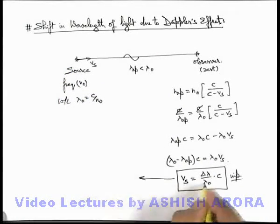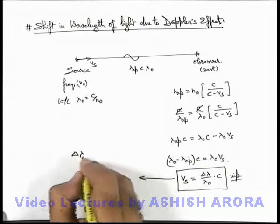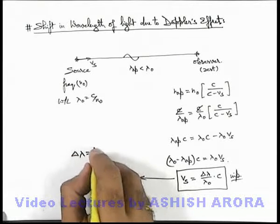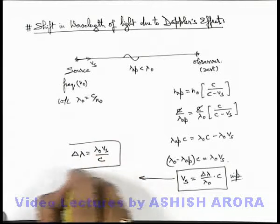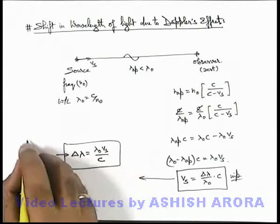And from the same expression we can find out the value of change in wavelength, which can be written as lambda knot v s by c. And here this change in wavelength is called